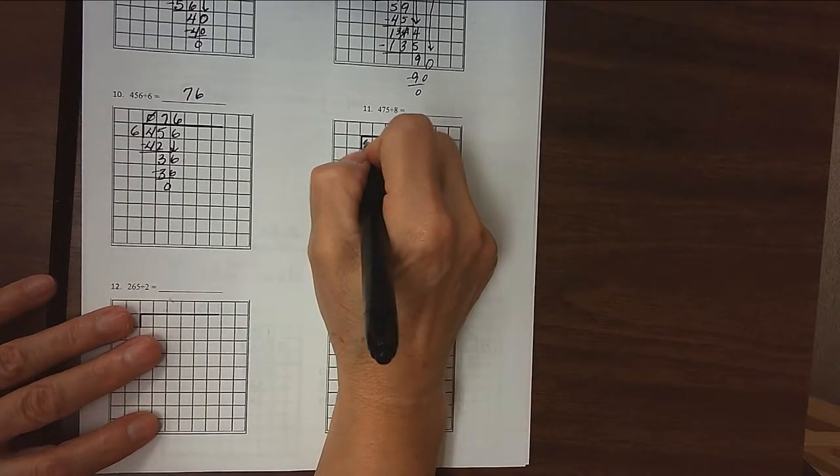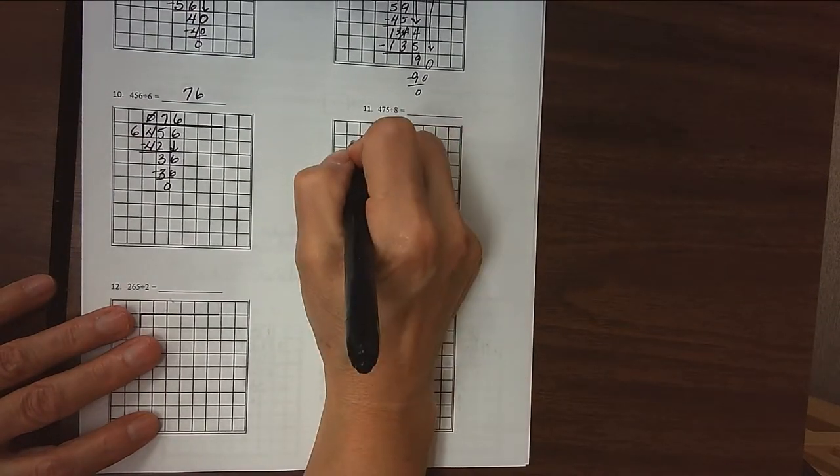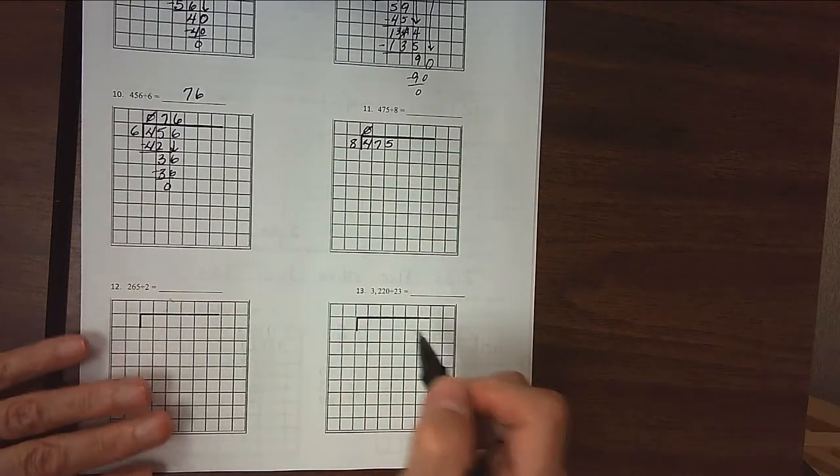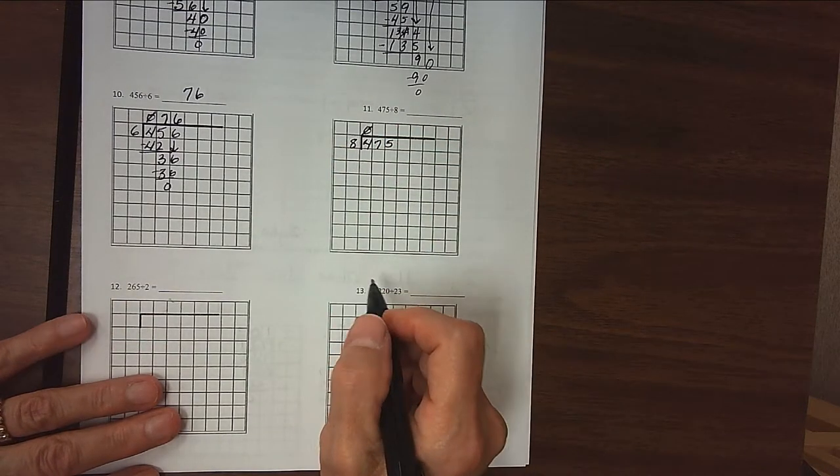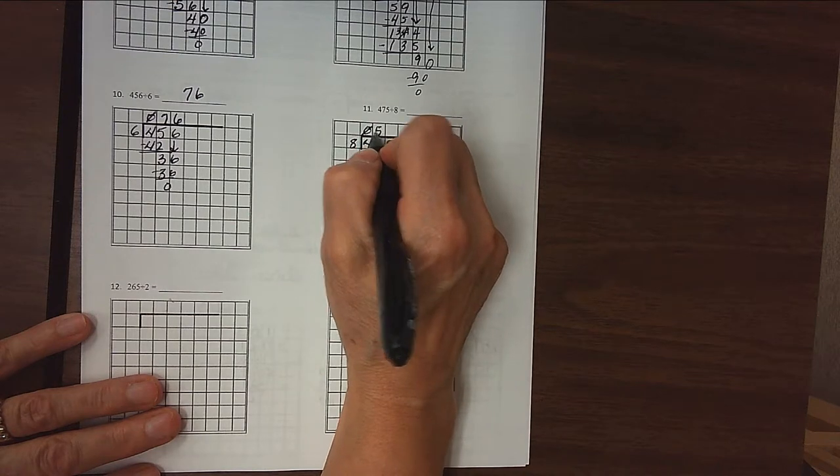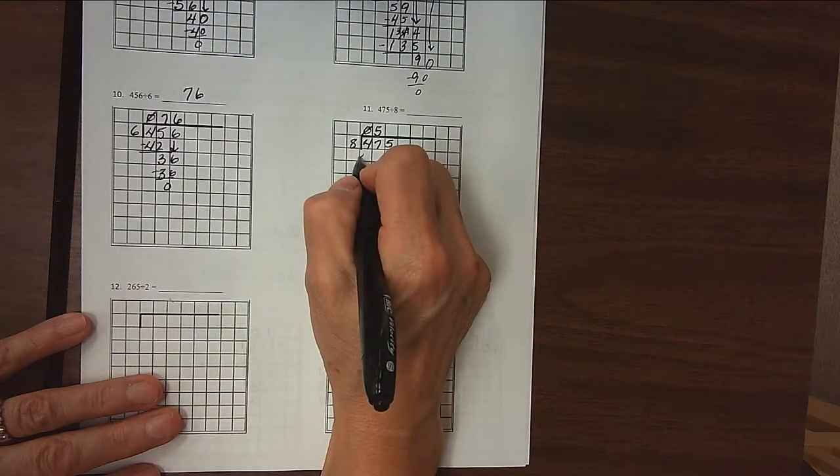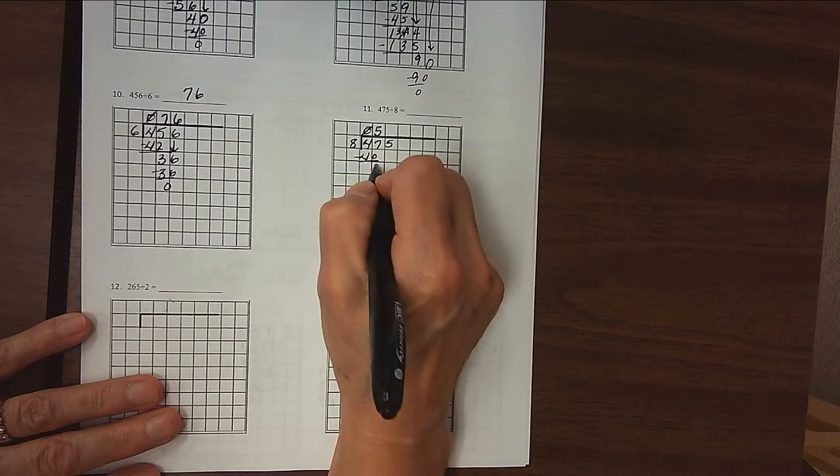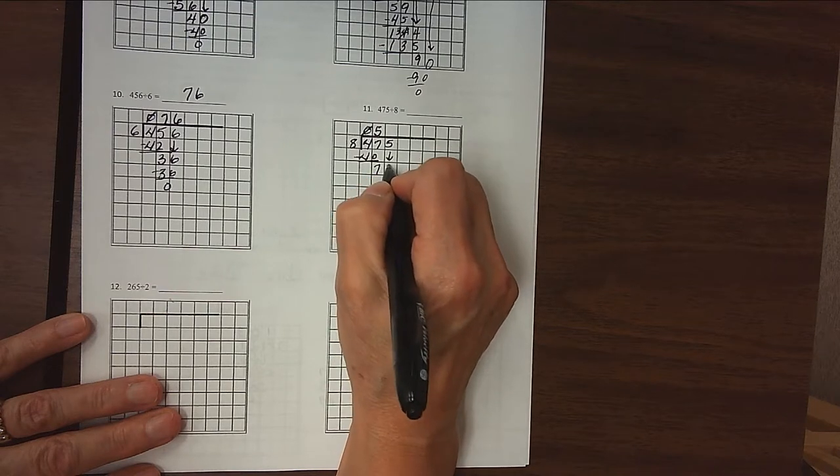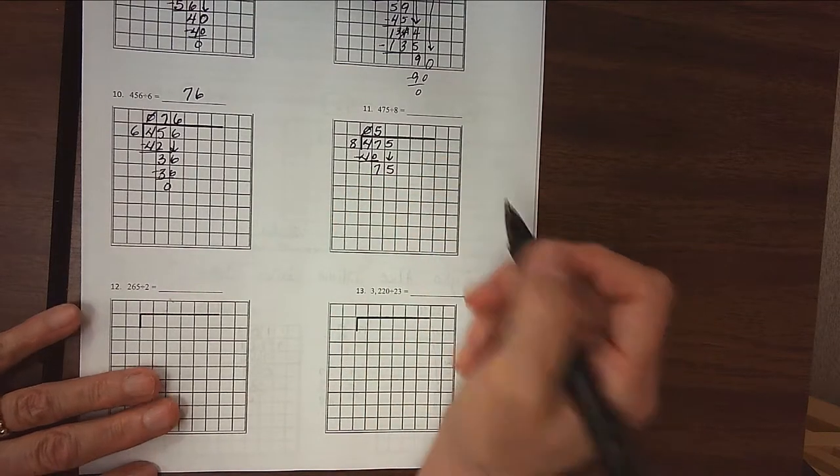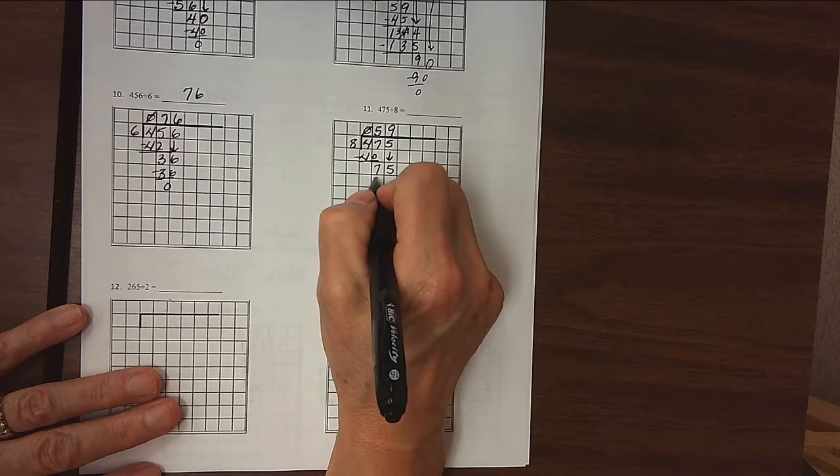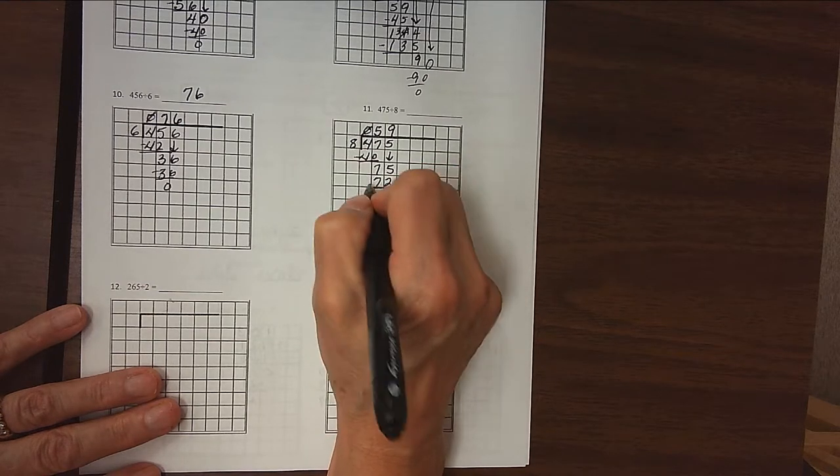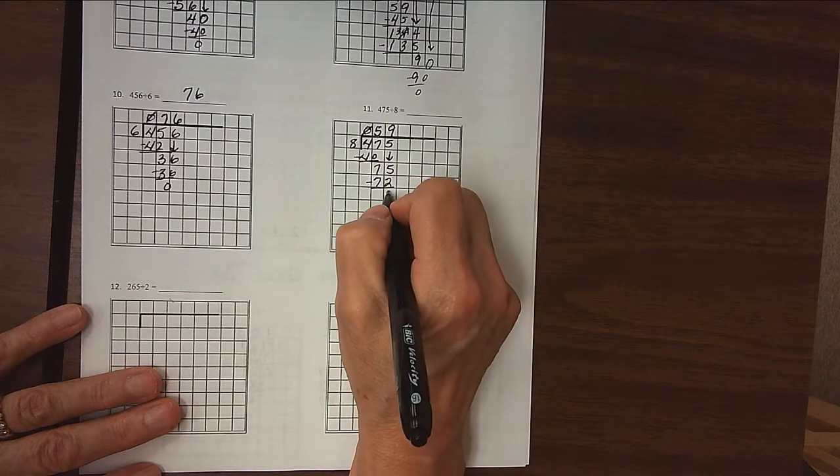All right, and then 76 for number 11. We're going to take 475 and divide by 8. 8 doesn't divide into 4, we can mark that with a 0 if we want to. 8 divides into 47 five times. 8 times 5 is 40. Subtract and we get 7. Bring down, we have 8 divided into 75. That goes in 9 times. 9 times 8 is 72. Subtract, 5 minus 2 is 3.